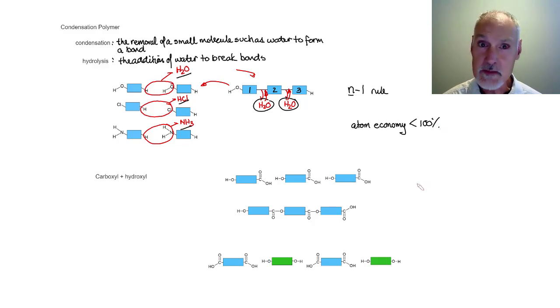In order to perform condensation polymerization, we require two functional groups. So let's look at a few examples. Here, I'm going to take the carboxyl functional group and the hydroxyl functional group. And we can see that present in my starting material. There's the hydroxyl group. And right there, we've got the carboxyl group.